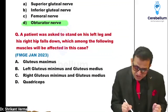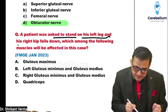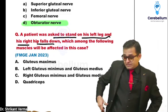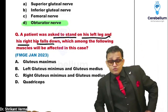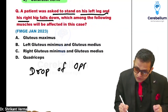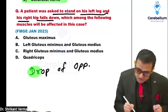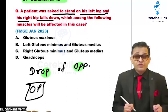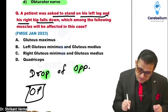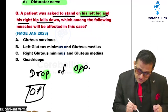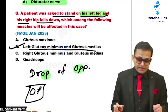Next question: a patient was asked to stand on his left leg and his right hip falls down. The patient is standing on the left leg and the right side, which normally elevates, is going down. Remember in Trendelenburg's sign there is a drop of the opposite side — the mnemonic OP OP. Because the patient is standing on the left leg and the right side is dropping, the same side muscles are involved. The answer is the left gluteus medius and minimus — answer is B.